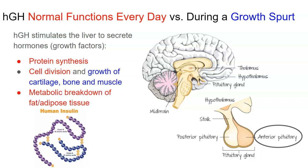We can also use HGH to basically take fat or adipose tissue and metabolically break it down into other things like glucose. Glucose is needed for cellular respiration, which is the process where we use glucose and make ATP from it. So HGH is very, very important on an everyday basis, but during puberty, it's going to cause individuals to grow and get taller and all that fun stuff.